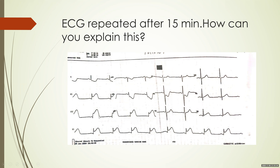The ST elevations are more prominent compared to the pre-lysis ECG, and combined with the increase in chest pain, this is a failed lysis — you need to do something about it. So you had an inferior wall MI initially, which went to a lateral wall MI, and now has come back to an inferior wall MI. How is this possible to explain?